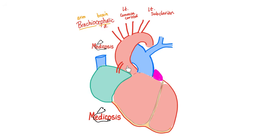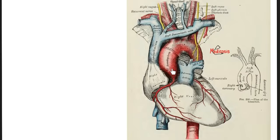The ascending aorta has a sinus that gives the right coronary artery and left coronary artery. The left coronary artery divides into left anterior descending and left circumflex. The aortic arch gives the brachiocephalic artery, the left common carotid artery, and the left subclavian artery. The brachiocephalic artery itself divides into the right subclavian and right common carotid.